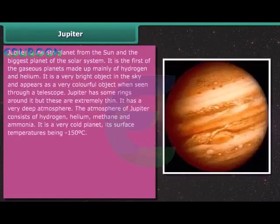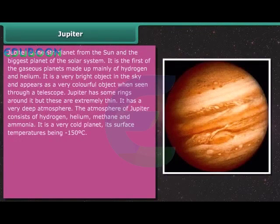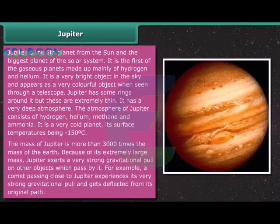Jupiter. Jupiter is the fifth planet from the Sun and the biggest planet of the solar system. It is the first of the gaseous planets made up mainly of hydrogen and helium. It is a very bright object in the sky and appears as a very colorful object when seen through a telescope. Jupiter has some rings around it but these are extremely thin. It has a very deep atmosphere. The atmosphere of Jupiter consists of hydrogen, helium, methane and ammonia. It is a very cold planet, its surface temperatures being minus 150 degrees Celsius. The mass of Jupiter is more than 3000 times the mass of the Earth. Because of its extremely large mass, Jupiter exerts a very strong gravitational pull on the other objects which pass it by. For example, a comet passing close to Jupiter experiences its very strong gravitational pull and gets deflected from its original path.